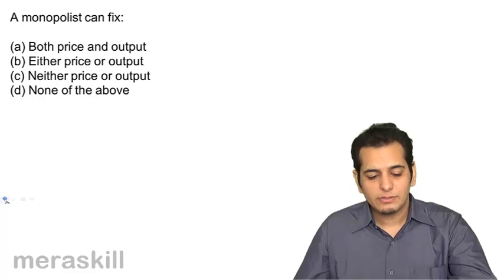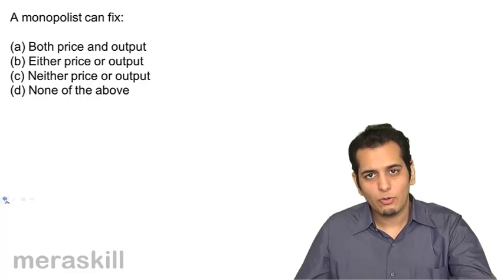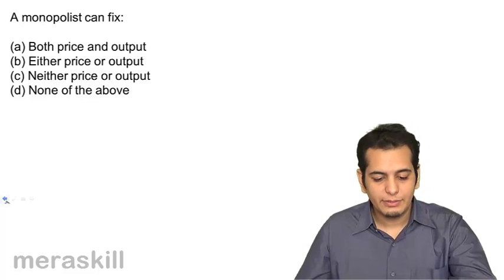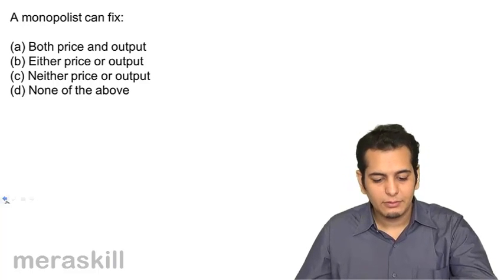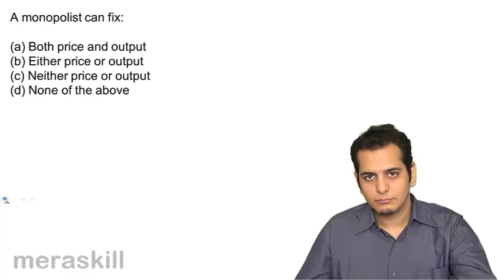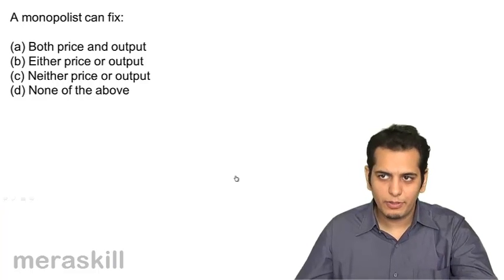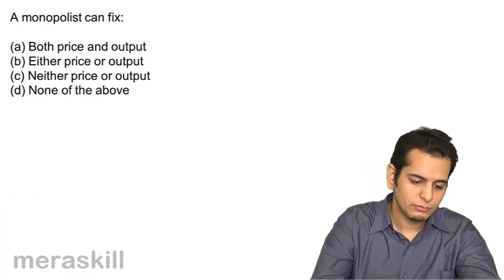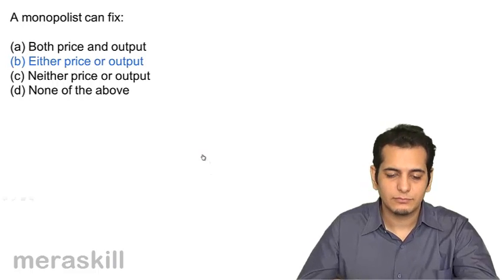The monopolist can fix: a) both price and output, b) either price or output, c) neither price nor output, d) none of the above. The answer is b) either the price or the output. He can't choose both at the same time.